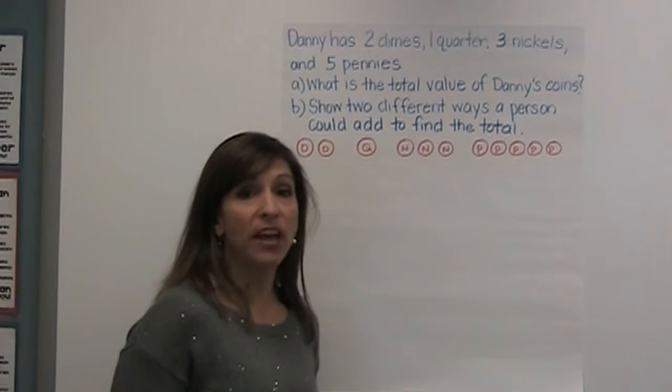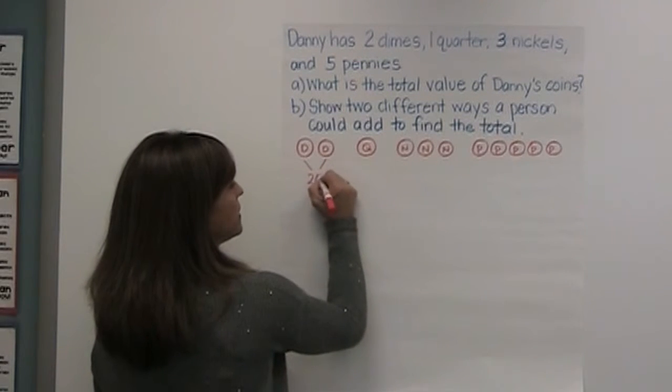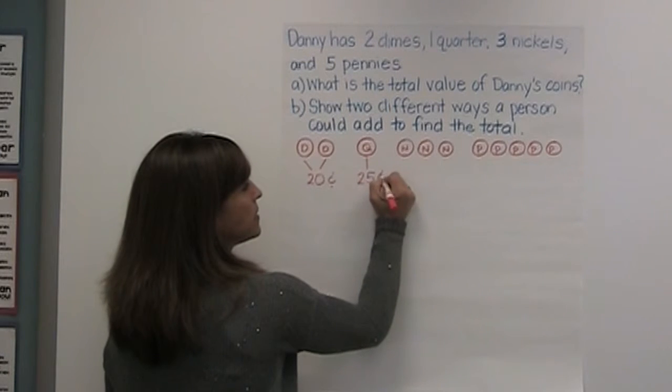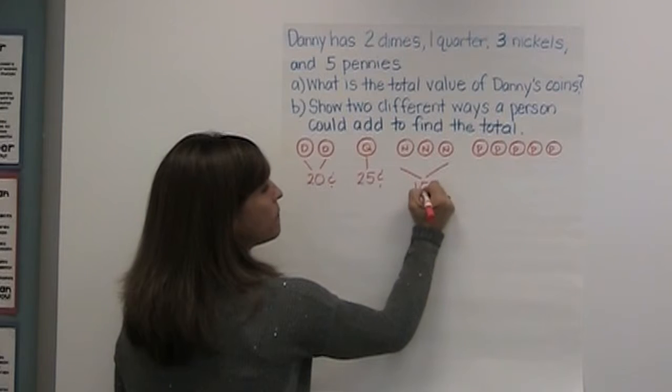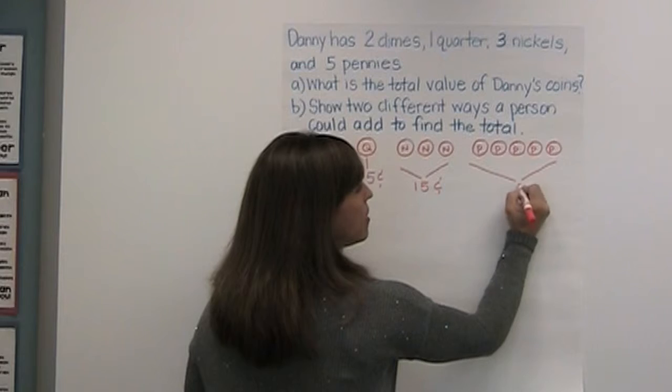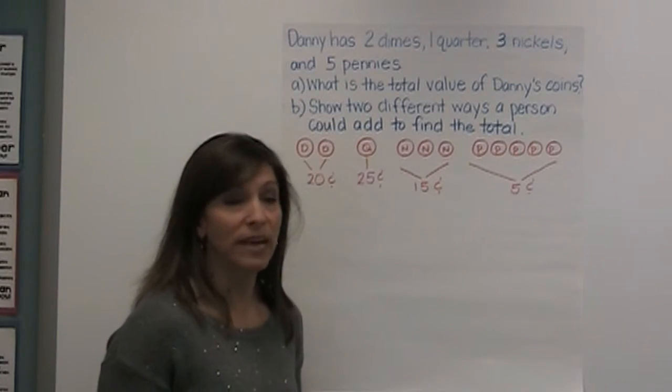I'll write the value of each group underneath. My dimes equal twenty cents. My quarter is twenty-five cents. My three nickels are fifteen cents. And my five pennies are five cents. Now all I have to do is add them together.